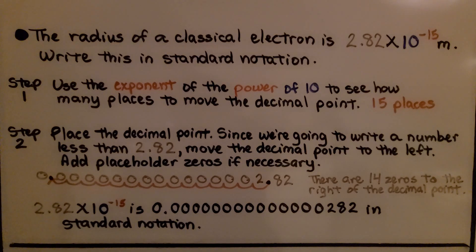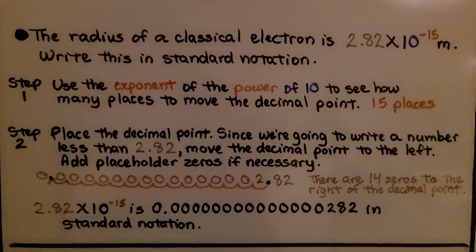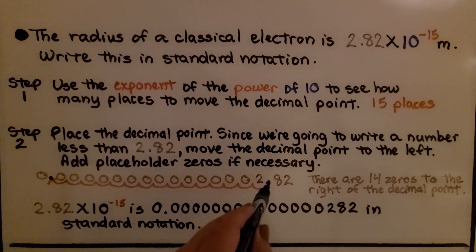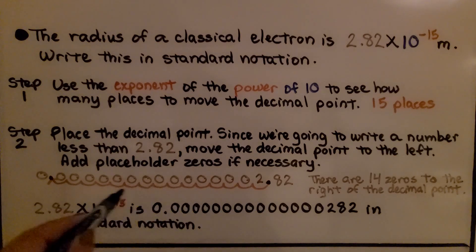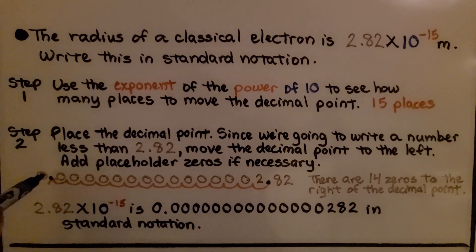Step two: we place the decimal point. Since we're going to write a number less than 2 and 82 hundredths, we're going to move the decimal point to the left and add placeholder zeros if necessary. We need to go 15 hops all the way over.